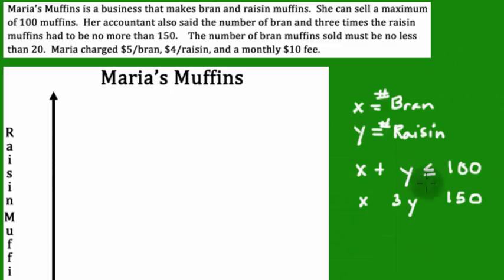The number of bran and, well that usually means addition. It had to be no more than 150. If it cannot be greater, no more than means not greater. It can be less than, or it can be equal to, but it cannot be greater. That takes care of that sentence.